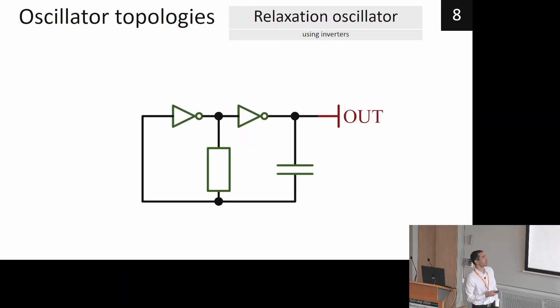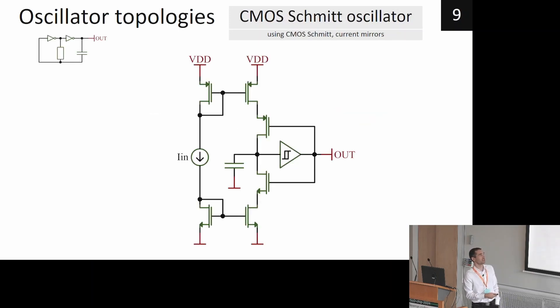So now we'll go to the topologies. The first, this more simple topology, is a double inverter topology with resistor and capacitor. It's also called a simple realization oscillator. Now we usually want to remove the need of resistances in our circuits, so we can replace the resistor with current